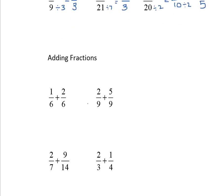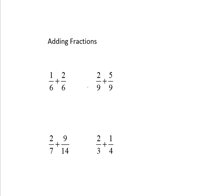When we're adding fractions, the key is that the denominator must be the same. And once the denominator is the same, we simply add the numerators together. So 1/6 plus 2/6, 1 plus 2, means I've got 3/6. And then we can simplify that one. 2/9 plus 5/9, 2 plus 5, 7/9.